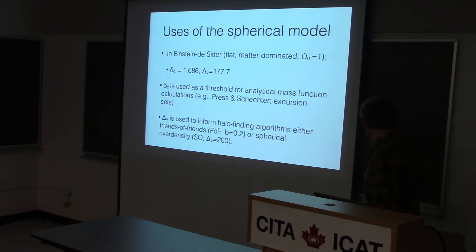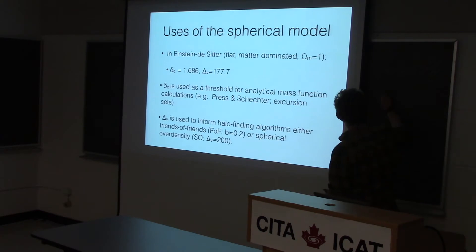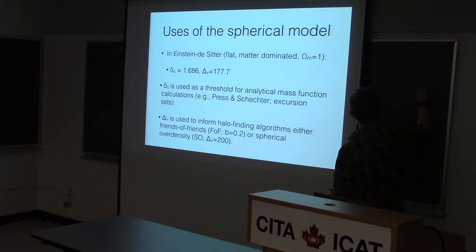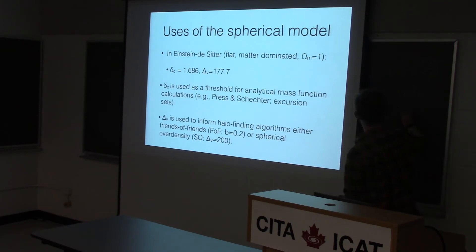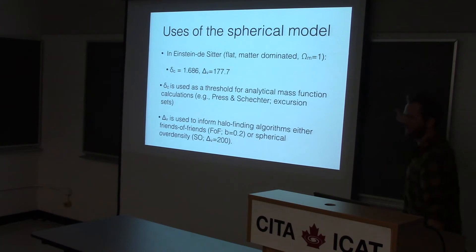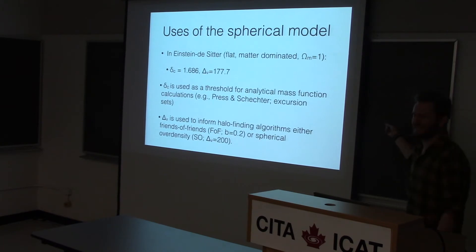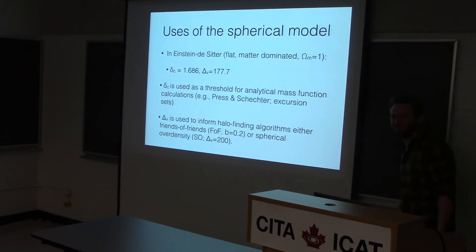I'll just write those numbers on the board because they're important: 1.686 for delta_C, and delta_V is about 177.7. If you follow this calculation through and believe it exactly, this number is 18π², which is a nice number.